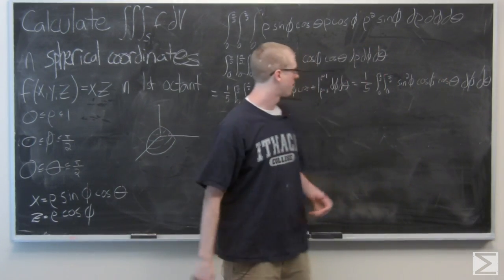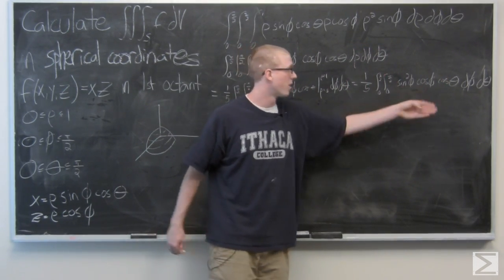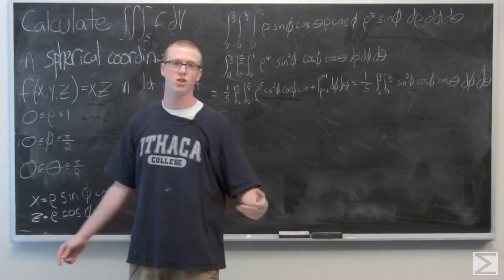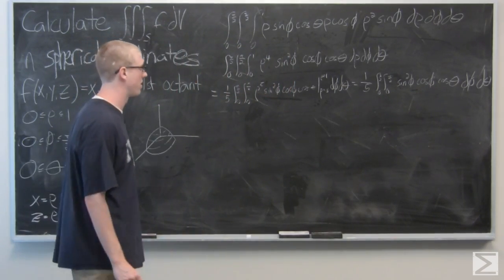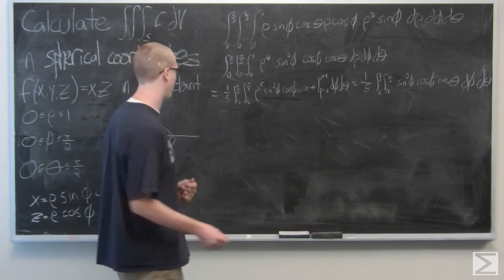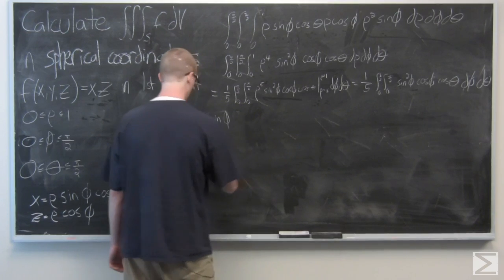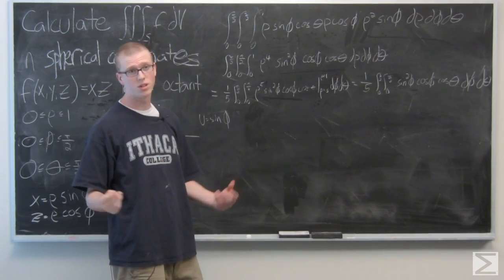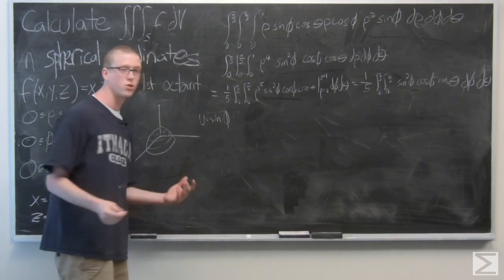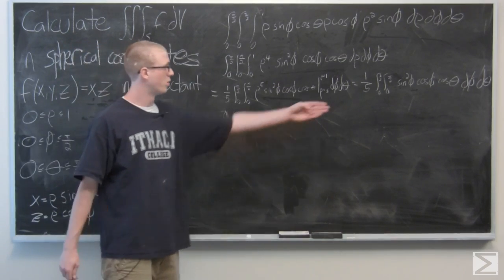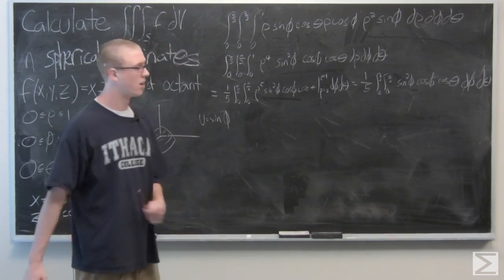Not as pleasant to work with on this side because we have a sine squared phi and a cosine phi. So we're going to use a U substitution here. I'm going to set U equal to sine phi, which means du is just going to be cosine phi d phi, which we can see up in our integral.